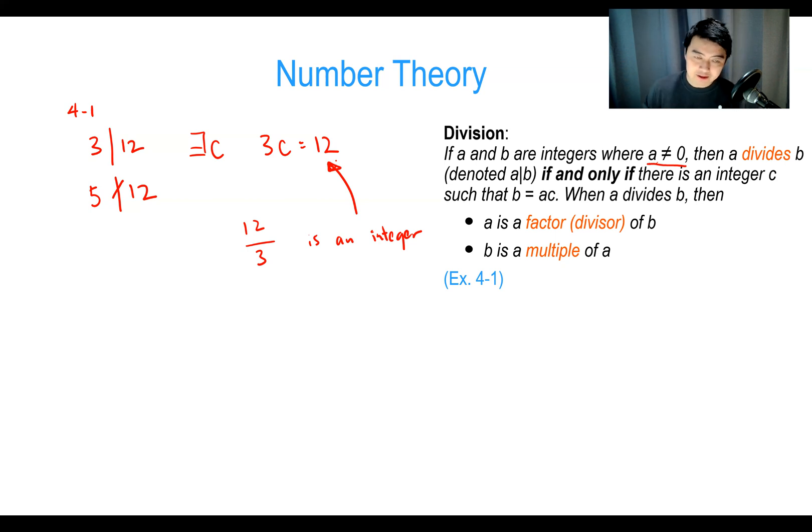Now that we have this definition, we can move on and define some theorems. Theorem one says: let A, B, and C be integers. Then we have three statements that are all true. The first one: if A divides B and A divides C, then A divides B plus C.